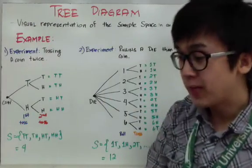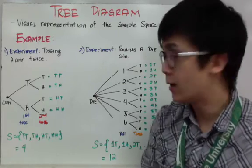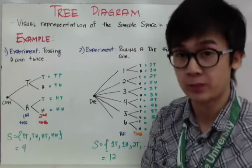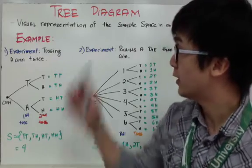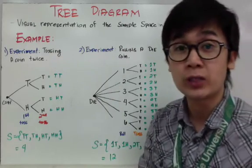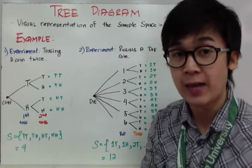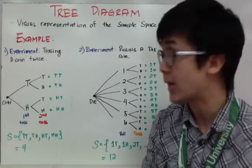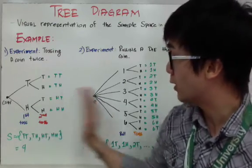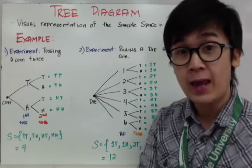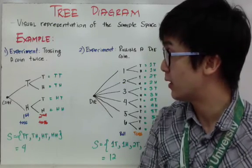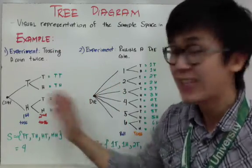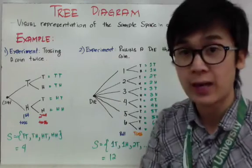Since sample space is really important in probability, there are many ways to find or list your sample space. One visual representation we can use is a tree diagram. A tree diagram is basically a visual representation of all elements in your sample space. I have two examples here showing how to produce the sample space using a tree diagram. It takes practice to create one, but it is very helpful in most probability questions.